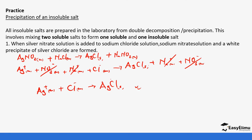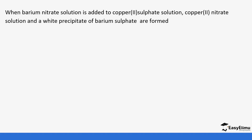The remaining ions are Ag⁺ plus Cl⁻ to form silver chloride. So this is the ionic equation derived from the reaction between silver nitrate and sodium chloride.